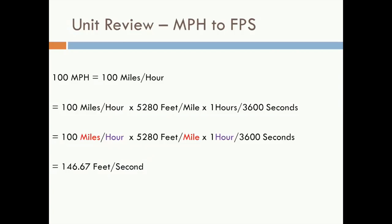Let's do some unit conversion. We're going to convert 100 miles per hour to feet per second. In order to do this, we need to multiply by two conversion factors: one that converts miles into feet, and another that converts hours into seconds. We'll take 100 miles per hour and multiply by the first conversion factor, 5280 feet per one mile. What this does is place miles in both the numerator and denominator, and therefore they cancel, leaving us with only feet in the numerator.